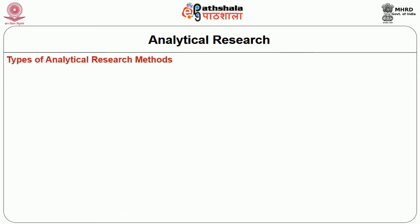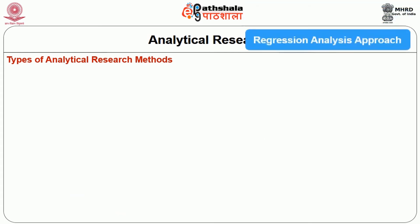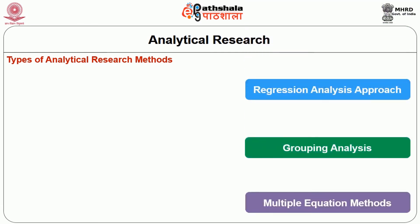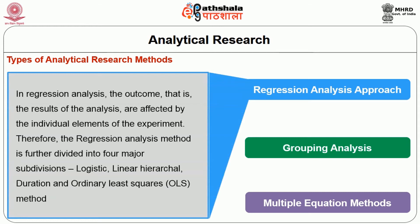There are three types of analytical research methods: regression analysis approach, grouping analysis approach, and multiple equation methods. In regression analysis, the results of the analysis are affected by the individual elements of the experiment. Therefore, the regression analysis method is further divided into four main subdivisions: logistic, linear, hierarchical, duration and ordinary least square method. These subdivisions will be discussed later in the module on inferential statistics.